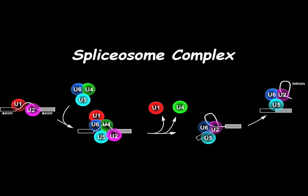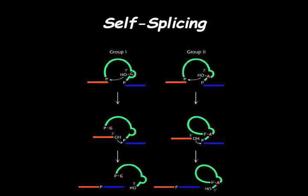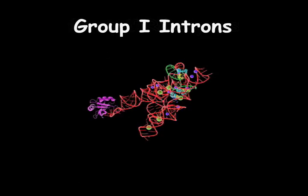Most splicing occurs with the aid of proteins in the spliceosome complex. However, many hundreds of introns are able to splice without the aid of proteins and are considered to be self-splicing. Group 1 introns fall into this category.